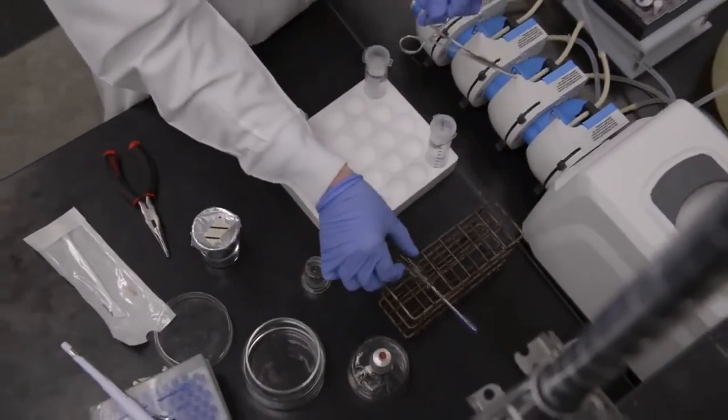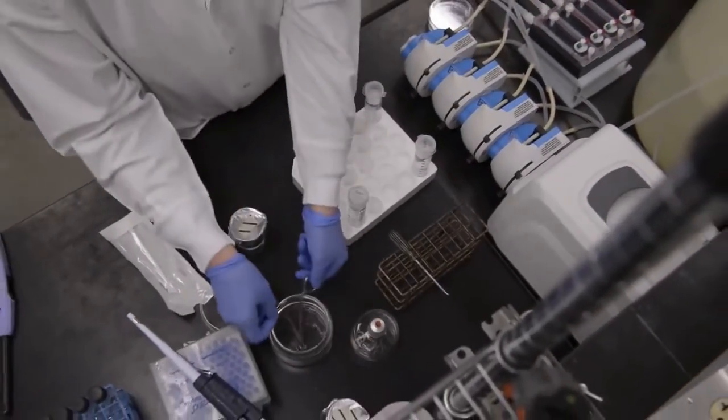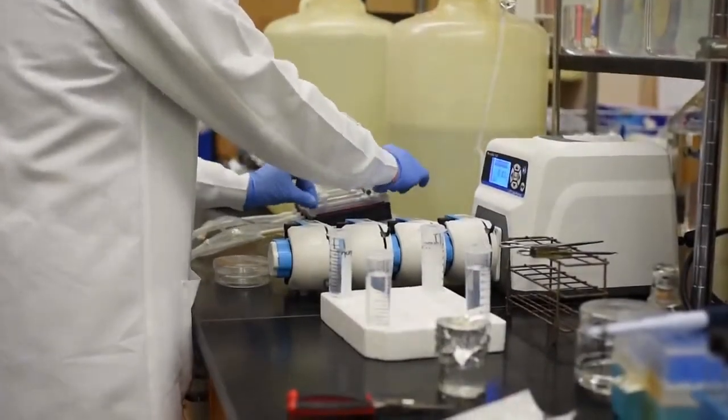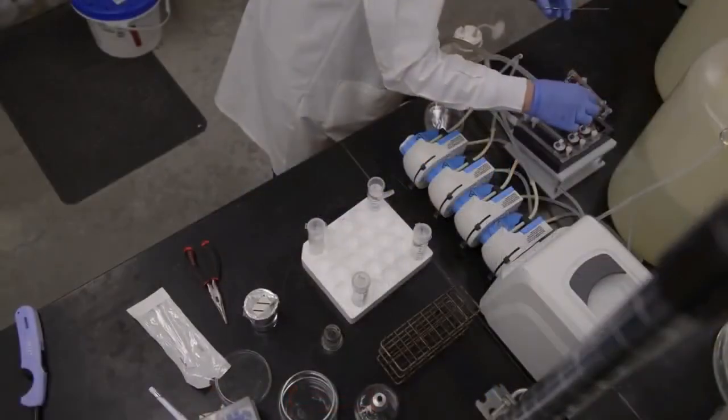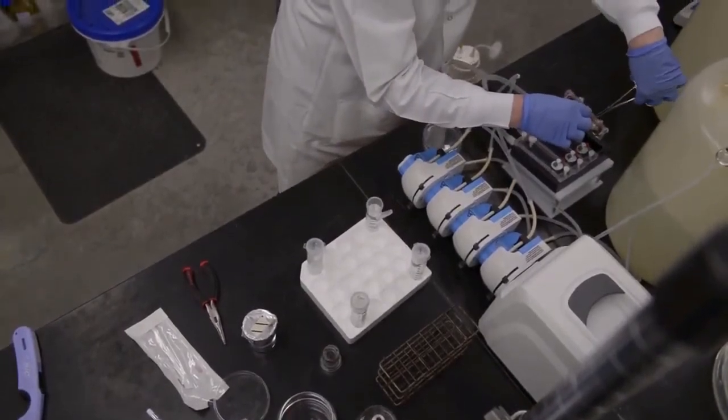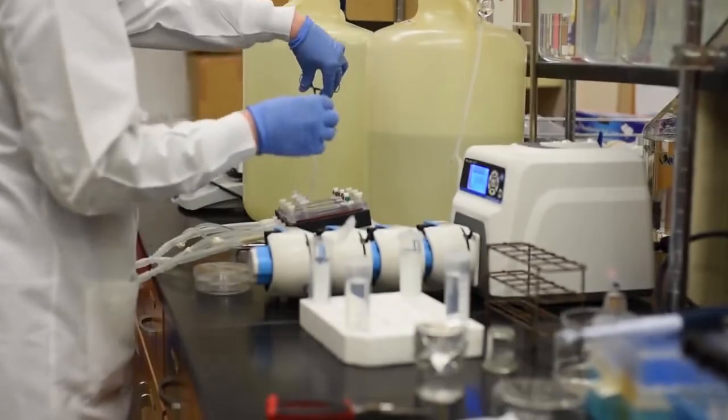Flame sterilize the slide removal tool that accompanies the reactor and a hemostat. Loosen the thumb screws and remove the lid. Place the tool in the groove that runs down the middle of each channel and carefully lift the slide. Grasp the edge of the slide with the hemostat and gently remove it from the channel.